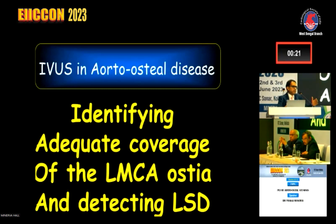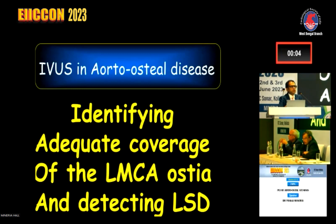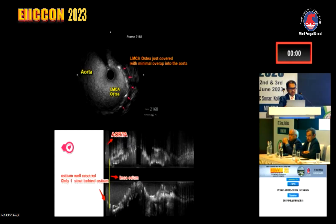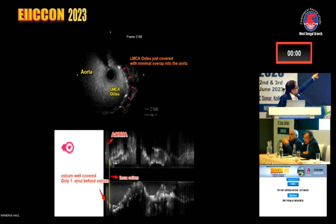Once we have implanted the stent, imaging is very necessary to identify two things: first, whether there is a geographical miss — have we covered the ostium or not; and second, to check for longitudinal stent deformation during post-dilatation. On IVUS, use the short-axis view — start from the aorta, and when you see stent struts beginning, that means you have covered the ostium. You can also take the long-axis view, identify the aorta, and confirm two struts are behind the aorta. Use both views to assess ostium coverage.